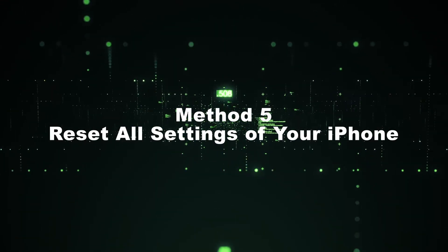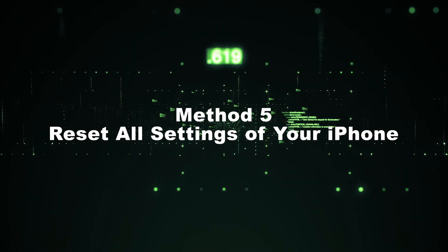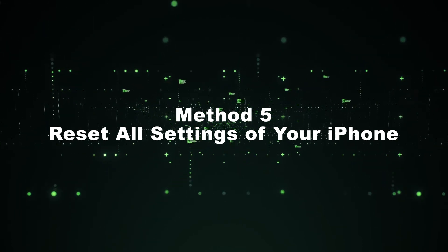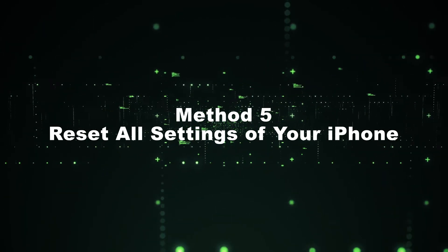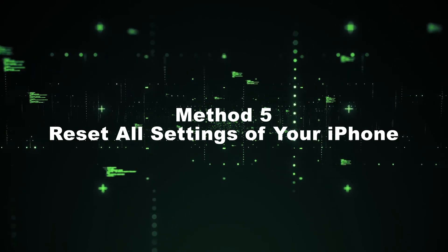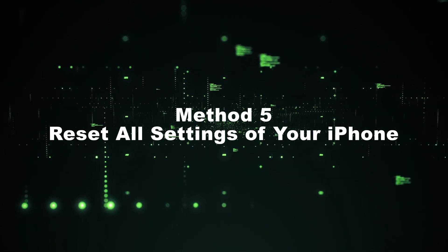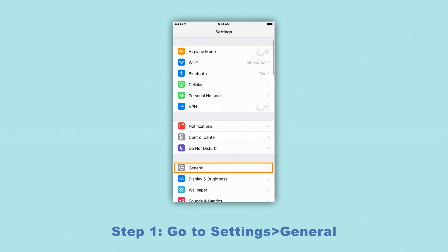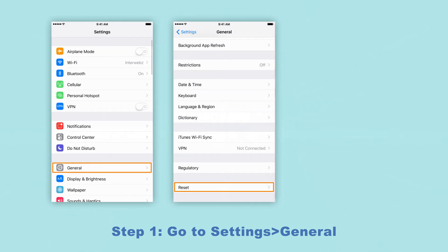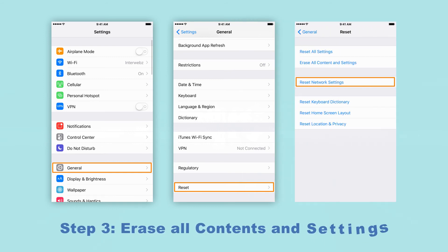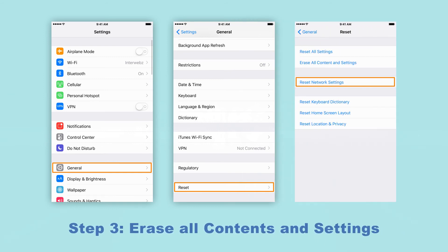Method 5: Reset all settings of your iPhone. If you want a direct and quick way to fix it, you can try resetting all settings of your iPhone. But note that it will remove all information from your device. Step 1: Go to Settings, then General. Step 2: Click Reset. Step 3: Erase all contents and settings.